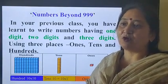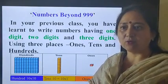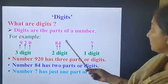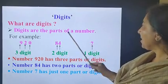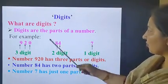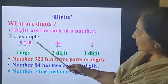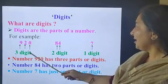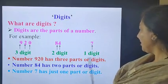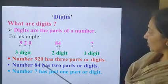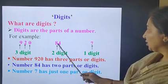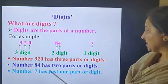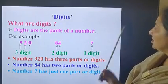Before starting numbers beyond 999, I would like to tell you about digits. Can you tell me what are digits? Digits are the parts of a number. For example, number 920 has 3 parts or 3 digits. Number 84 has 2 parts or digits. Number 7 has 1 part or digit.